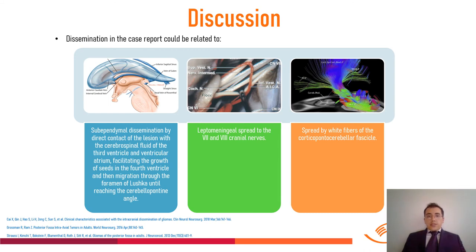Dissemination in this case report could be related to two mechanisms: subependymal dissemination by direct contact of the lesion with the cerebrospinal fluid of the third ventricle and ventricular atrium, facilitating seeding in the fourth ventricle and then migration through the foramen of Luschka to reach the cerebellopontine angle; or leptomeningeal spread to the seventh and eighth cranial nerves; or spread via white fibers of the corticopontocerebellar fascicle.